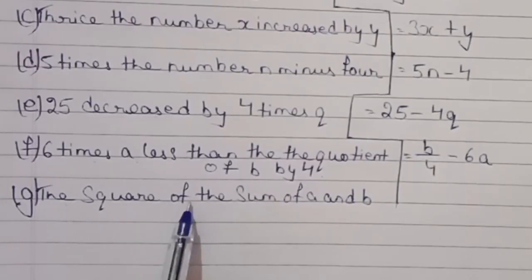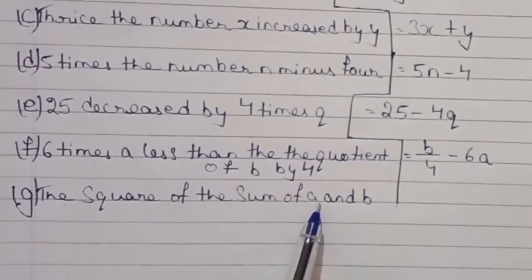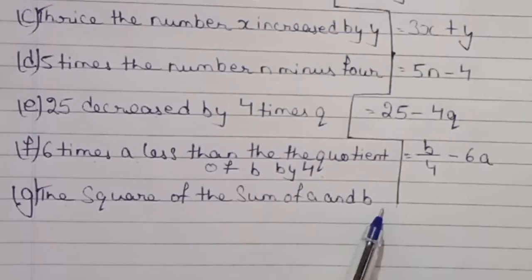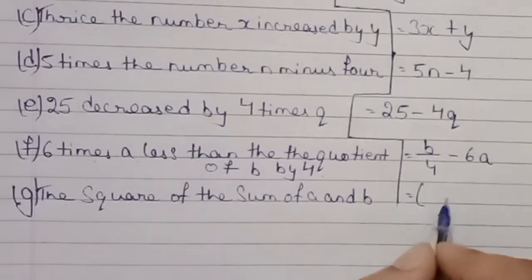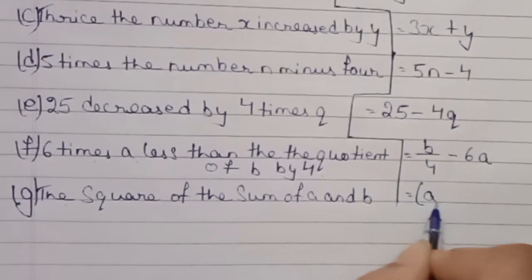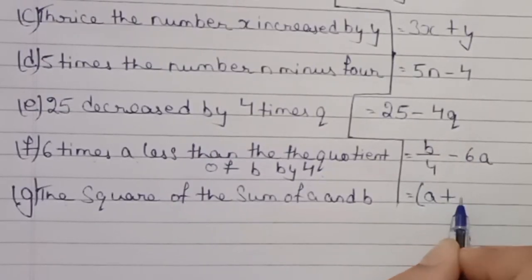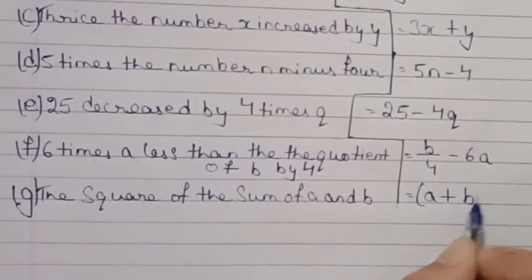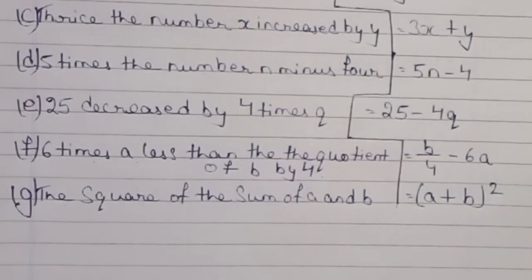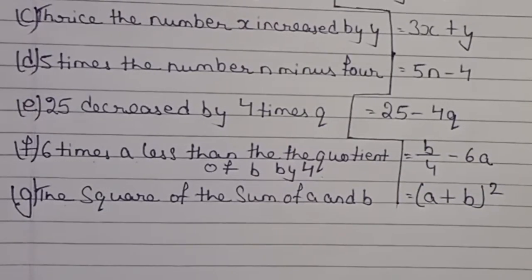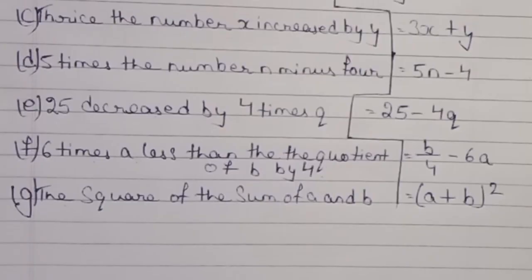G: The square of the sum of a and b. The answer will be bracket a plus b, and square: (a + b)². Question 2 is also complete.